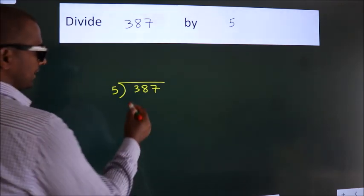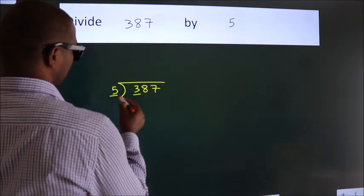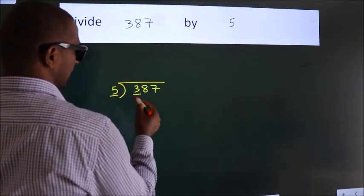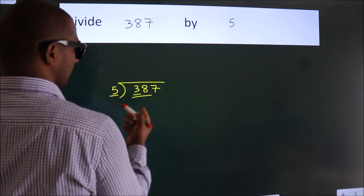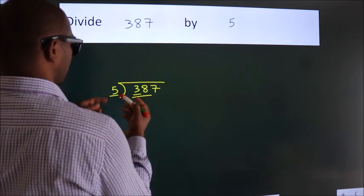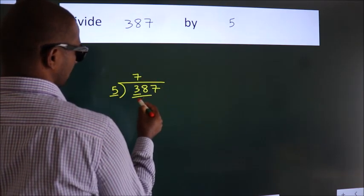Next. Here we have 3. Here 5. 3 is smaller than 5, so we should take 2 numbers: 38. A number close to 38 in the 5 table is 5 times 7, which is 35.